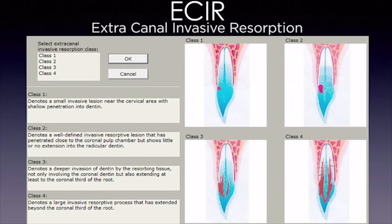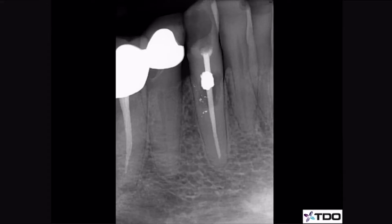Another great example of the importance of cone beam is in the diagnosis and treatment of resorption cases. This is the resorption guide from Jeffrey Hithersay showing the three classes of ECIR — extra canal invasive resorption. Class one is treatable, class two may be treatable, class three is probably not treatable, and class four is clearly not treatable. A two-dimensional picture does not show us much. The previous dentist reflected the tissue, made a small access prep, filled it with amalgam, and put the tissue back. One year later, the general dentist's radiograph showed evidence the lesion had grown. We immediately took a cone beam, which showed not only the extent of the lesion but that it had spread to the lingual aspect — illustrating to the patient why this lesion was too extensive to treat.